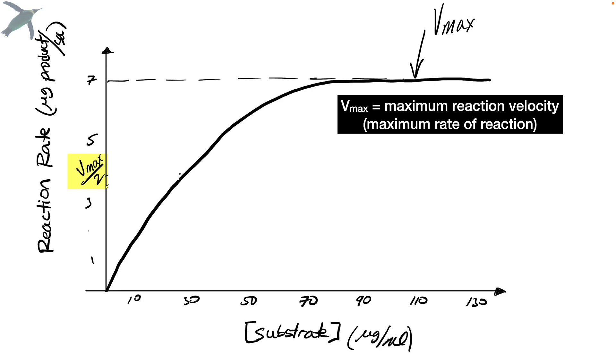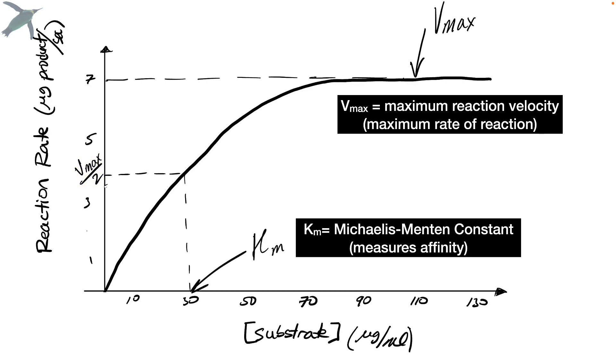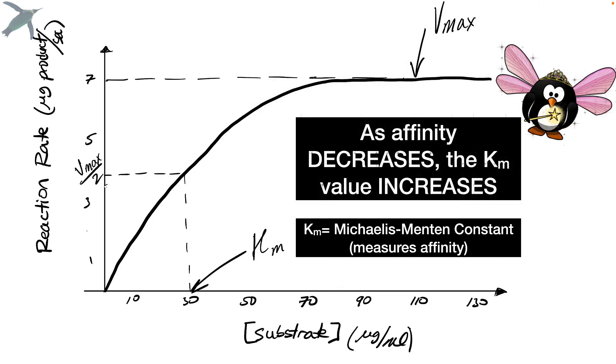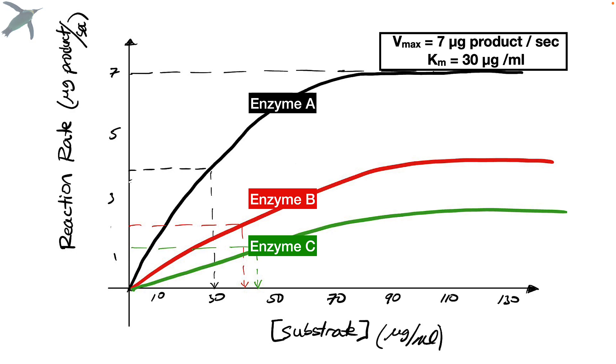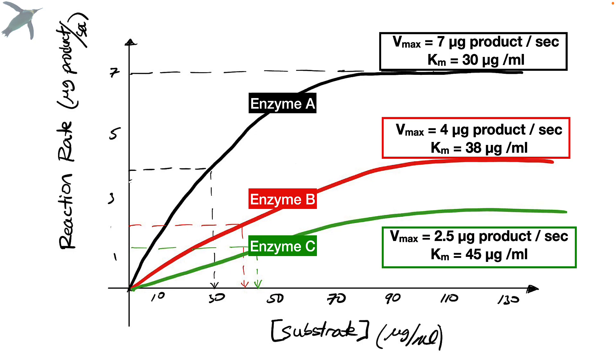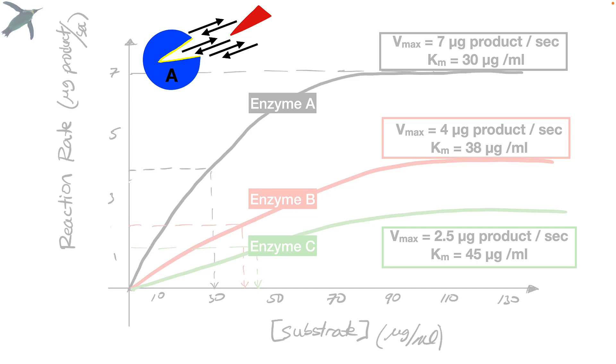We're also interested in this value. If you decrease Vmax by half, and you draw straight out to where it hits the curve, and then you draw straight down, that concentration of substrate is what we call the Michaelis-Menten constant. And it is a measure of enzyme substrate affinity. Don't panic over this. As affinity decreases, the Km value goes up. This is what we're going to do. We're going to look at three enzymes, A, B, and C. Enzyme A has a Vmax shown here with a Km of 30. Enzyme B has a Km of 38. And enzyme C has a Km of 45. It means that enzyme A has the highest affinity because the Km value is low. It takes less substrate molecules to achieve its Vmax over 2 value. Enzyme B is in the middle. And enzyme C has the lowest affinity of the three.